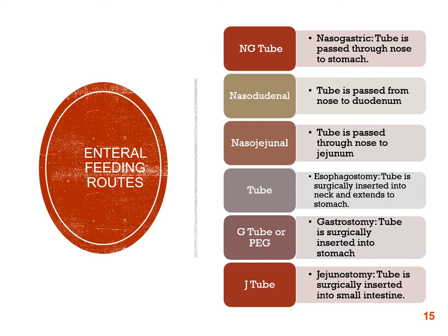Let's look at the different routes for enteral feedings. Most commonly we see NG tubes, G tubes, and J tubes. NG tube is nasogastric — passed through the nose into the stomach. G tube is the gastrostomy tube, surgically placed into the stomach, also known as a PEG. J tube is the jejunostomy tube — surgical insertion into the jejunum of the small intestine.